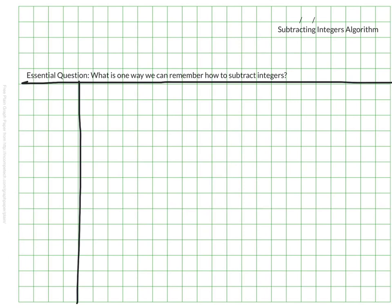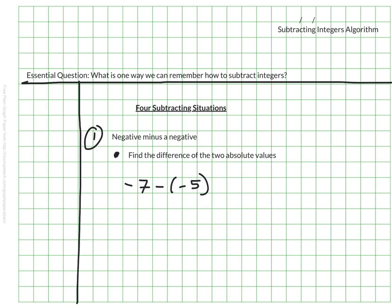As we have seen in class, there are four different situational rules that we have to keep track of when subtracting integers. One example is a negative minus a negative. When subtracting a negative from another negative, we need to find the difference of the two absolute values. If we have negative 7 minus negative 5, we find the difference. So 7 minus 5 is 2.